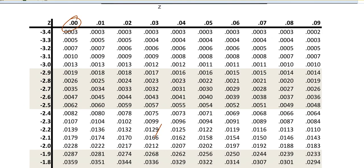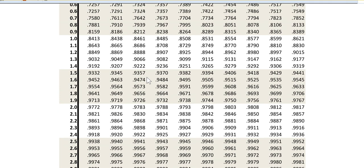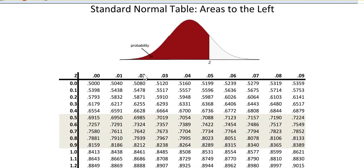So if we go to our normal table and look up 0.655, this one looks like the closest, so that's Z equals 0.40.